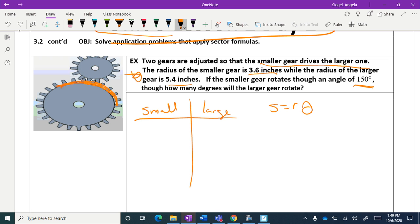I'm just going to fill in what I have. The radius of the small one is 3.6 inches and the radius of the large one is 5.4 inches. Theta is 150 on the small one and we don't know theta on the big one—that's what we're trying to find.